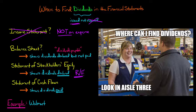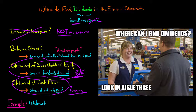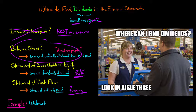The statement of stockholders' equity shows you the changes in all the different equity accounts that occurred over the course of the period. Retained earnings is an equity account, so in the reconciliation from the beginning balance to the ending balance of retained earnings, you will see the dividends that were declared — dividends declared reduce the company's retained earnings. The statement of cash flows will show any dividends that were paid, specifically in the financing section, as a cash outflow.